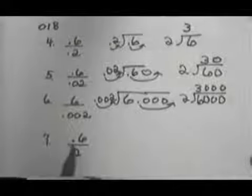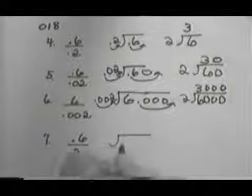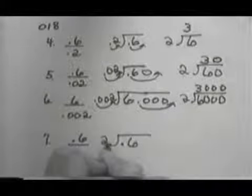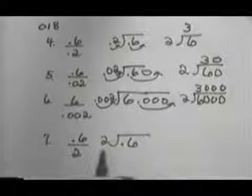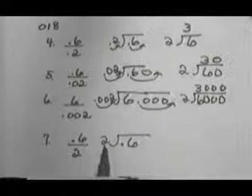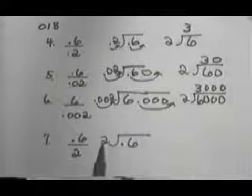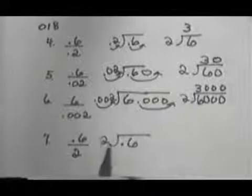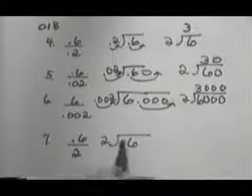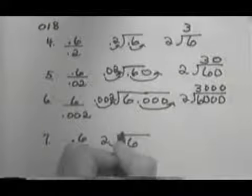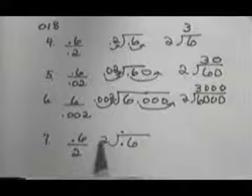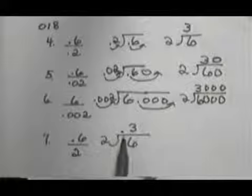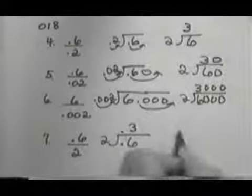Let's look at one more example. This one is 6 tenths divided by 2. Here, I've already got a whole number that I'm dividing by. Remember, if you're dividing by a whole number, you don't move your decimal at all. So it just stays where it is. Or, the 2 stays the way it is. And we don't move it inside any since we didn't move it outside. We just bring it straight up. And then we say 2 goes into 6, and we get our 3.